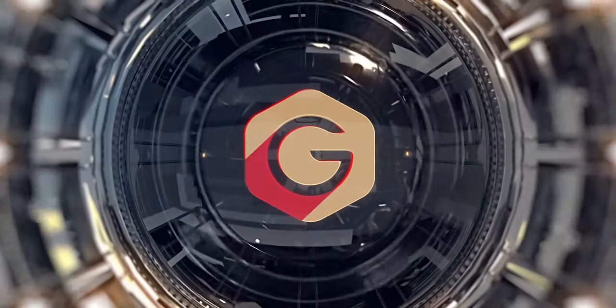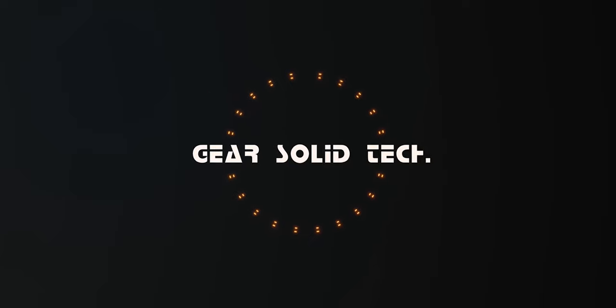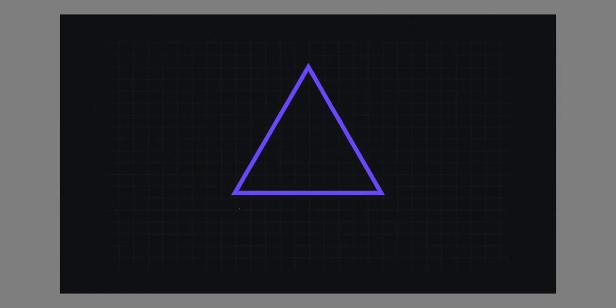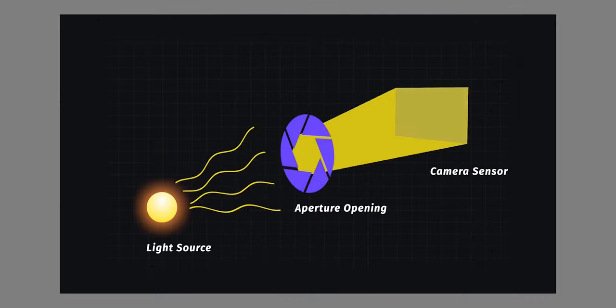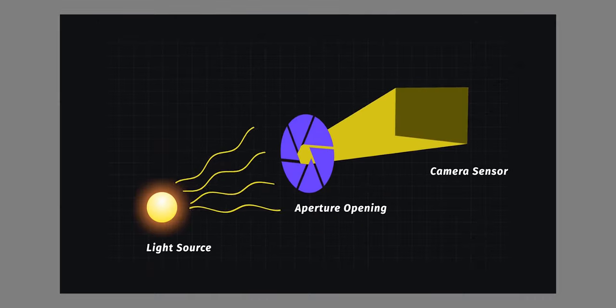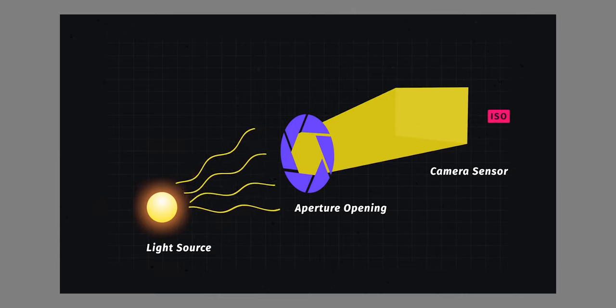To capture an image, there is one thing you absolutely need, which is light. I'm very sure you've heard of the exposure triangle before. It consists of the aperture, which controls the amount of light let into a camera. We also have ISO, which controls the gain or amplitude of the light. And then the last mechanism, known as the shutter.